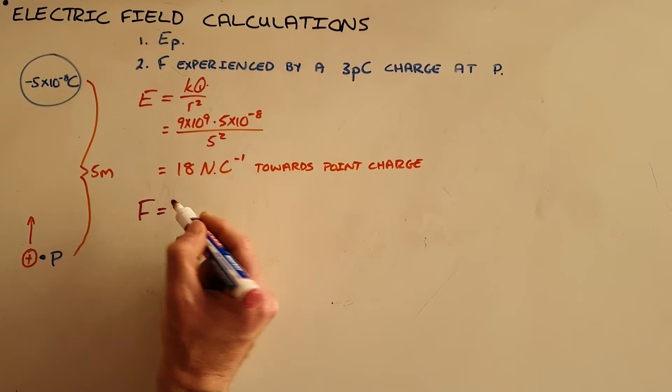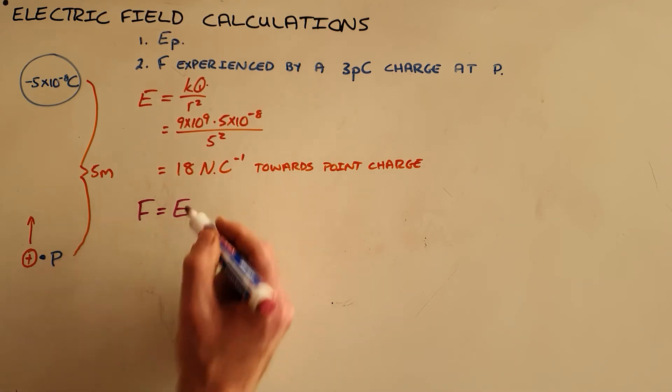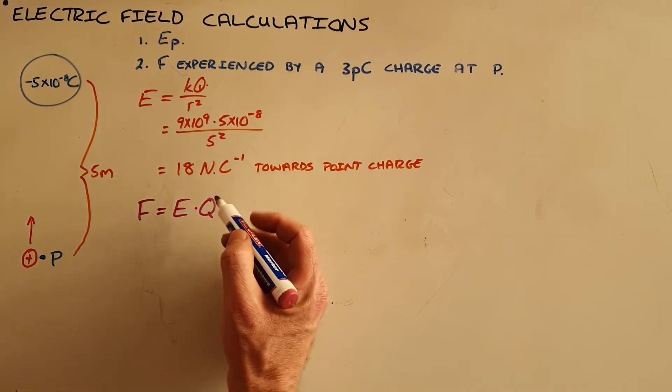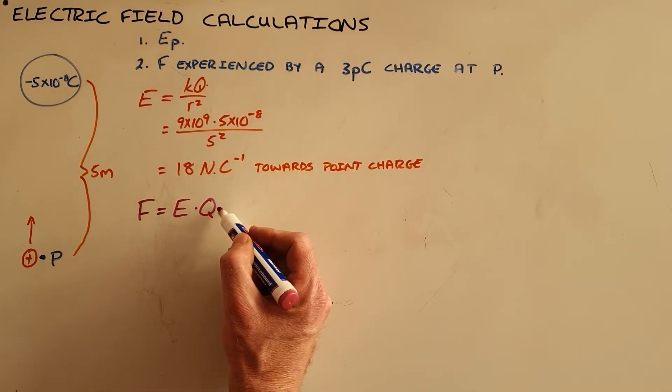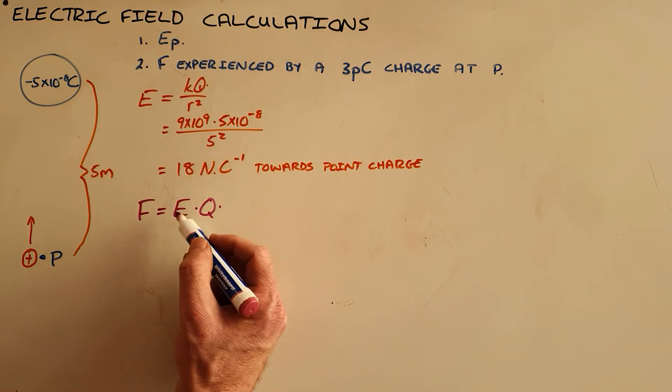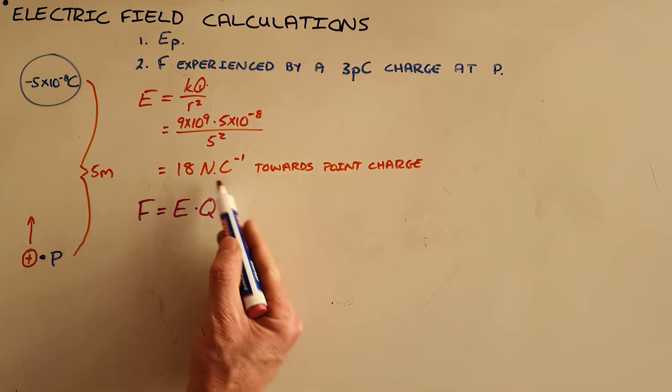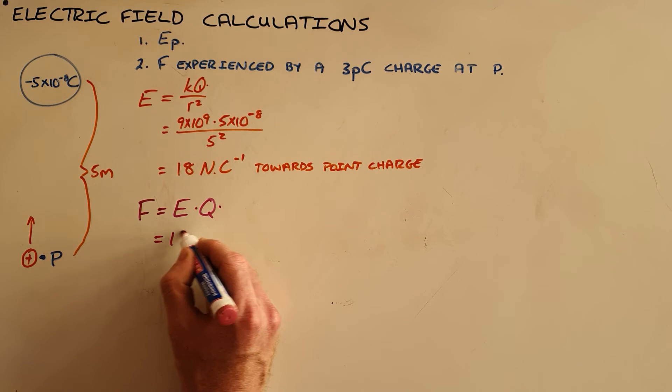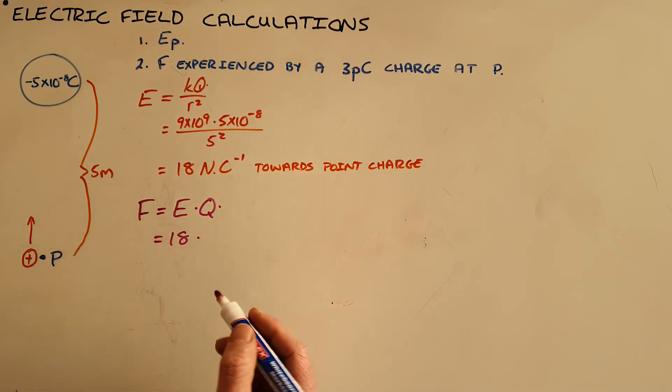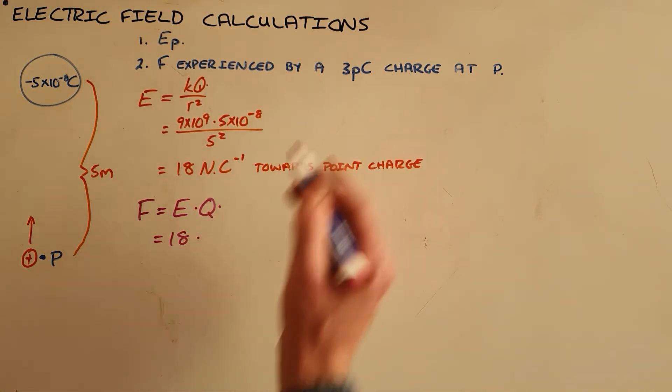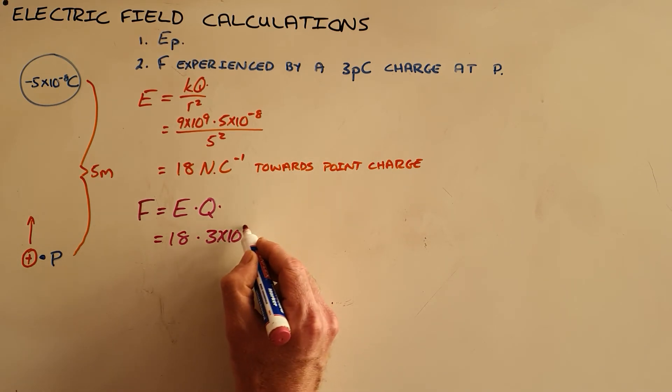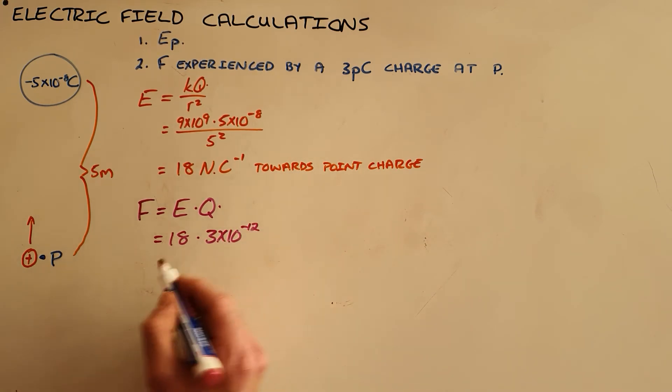And so, since we know that we have a formula that relates the electric field strength to the charge experiencing the force, so note here that this is the charge that is experiencing the force, the electric field we've already calculated at a distance of 5 meters away, and so we can say the electric field strength is 18, and the charge was given to us as 3 picocoulombs, which we know means 3 times 10 to the minus 12 coulombs.